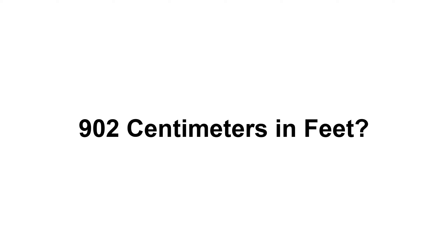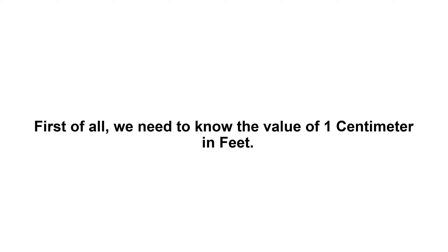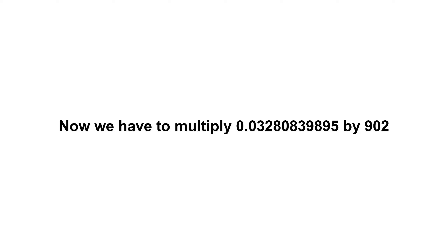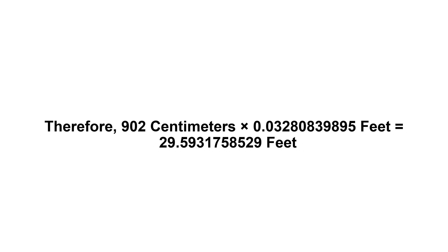902 centimeters in feet. First of all, we need to know the value of one centimeter in feet. One centimeter equals 0.03280839895 feet. Now we have to multiply 0.03280839895 by 902. Therefore, 902 centimeters times 0.03280839895 feet equals...